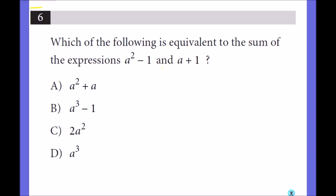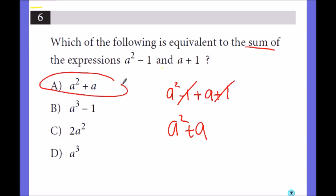Which of the following is equivalent to the sum of the expressions a squared minus 1 and a plus 1? So sum of these two, a squared minus 1 plus a plus 1, minus 1 plus 1 they cancel out. So I get a squared plus a. So it is A.